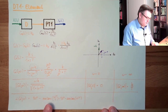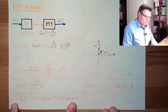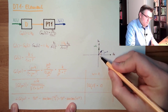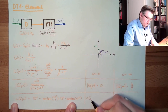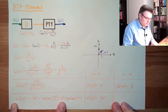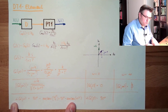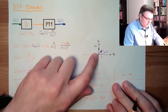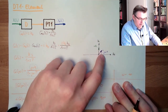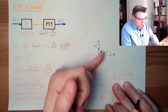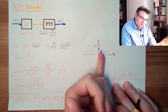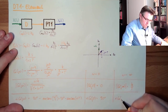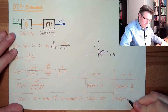Now for the argument. At ω = 0, arctan(0) = 0, so the argument is 90° − 0° = 90°. At ω → ∞, arctan(ωT) → 90°, so the argument approaches 90° − 90° = 0°. So the argument goes from 90° at low frequency down to 0° at high frequency.